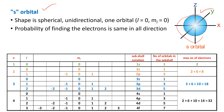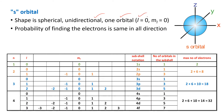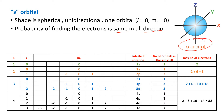The s orbital has a spherical shape. It is unidirectional and has only one orbital. The angular momentum quantum number l is equal to zero, and the magnetic quantum number ml is also equal to zero. The probability of finding the electron is the same in all directions because it is spherical.